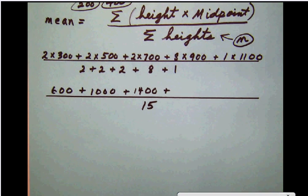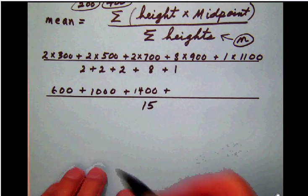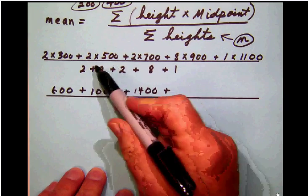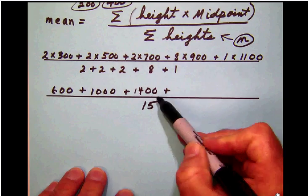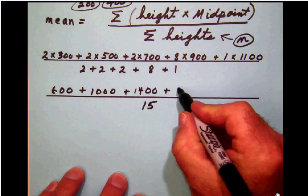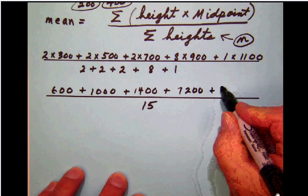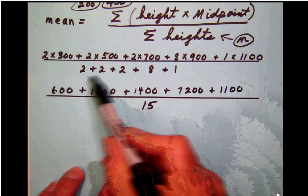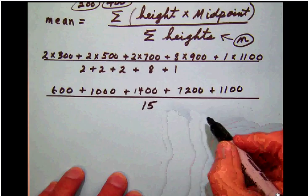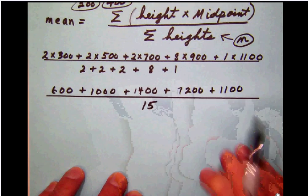Okay, so we're making progress here. The 2 times 300 is 600, 2 times 500 is 1000, 2 times 700 is 1400, 8 times 900 is 7200, 1 times 1100 is 1100. And of course we said here that N was 15, or we could have added those up and got to the same thing.